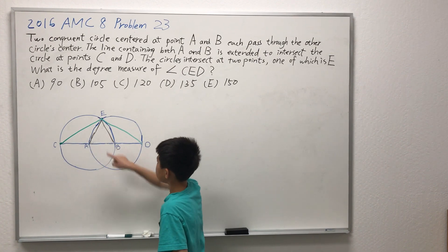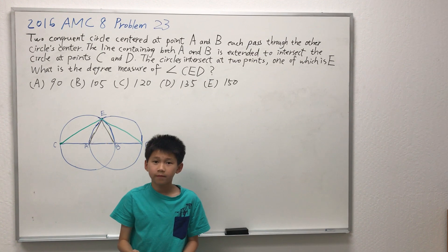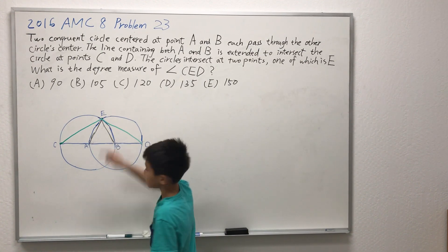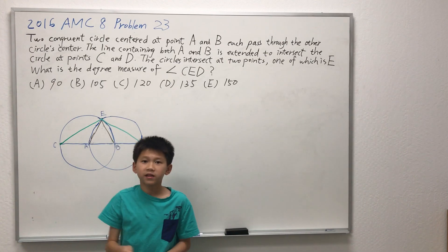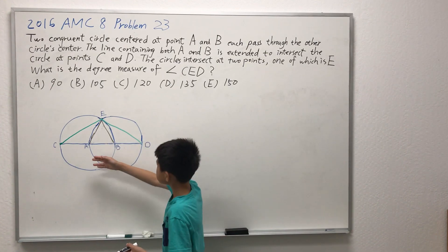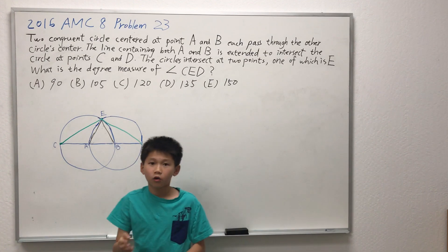Since line segment AB is a radius of circle A, and line segment AE is a radius of circle A as well, and line segment BE is a radius of circle B, and since circle A and circle B are congruent, that means that all three radii are congruent.